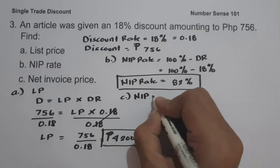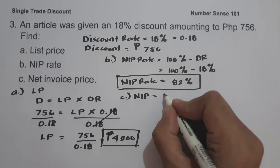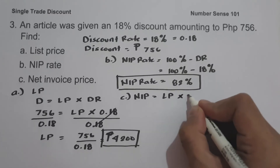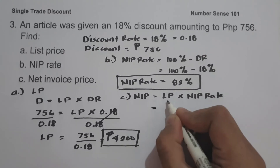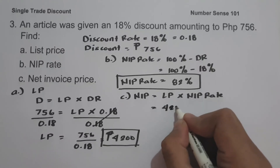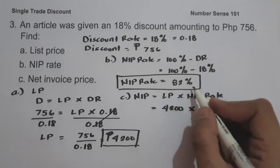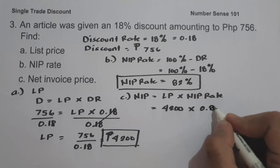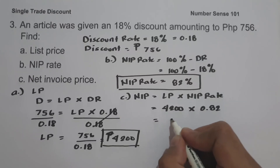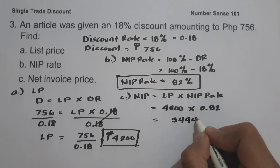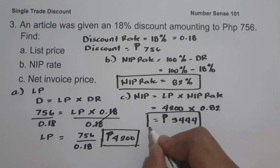On letter C, first let us find the NIP using the NIP rate: NIP equals list price multiplied by the NIP rate. List price four thousand two hundred multiplied by the NIP rate eighty-two percent, or zero point eighty-two. If you multiply this, we get three thousand four hundred forty-four pesos. This is our NIP.